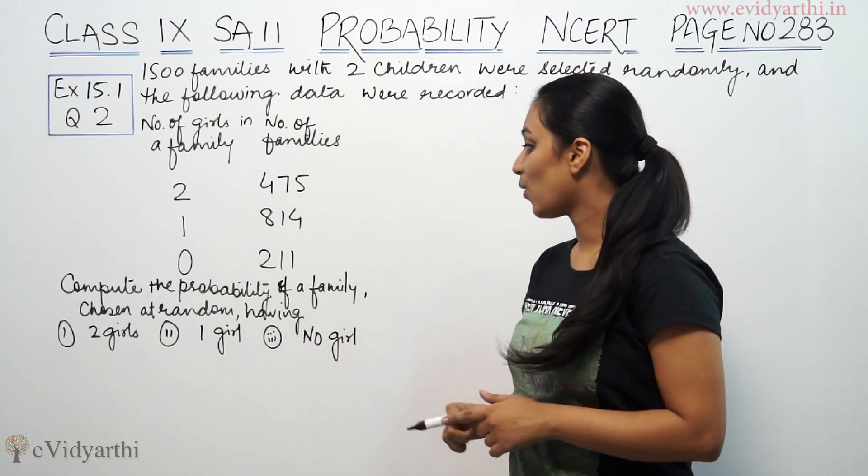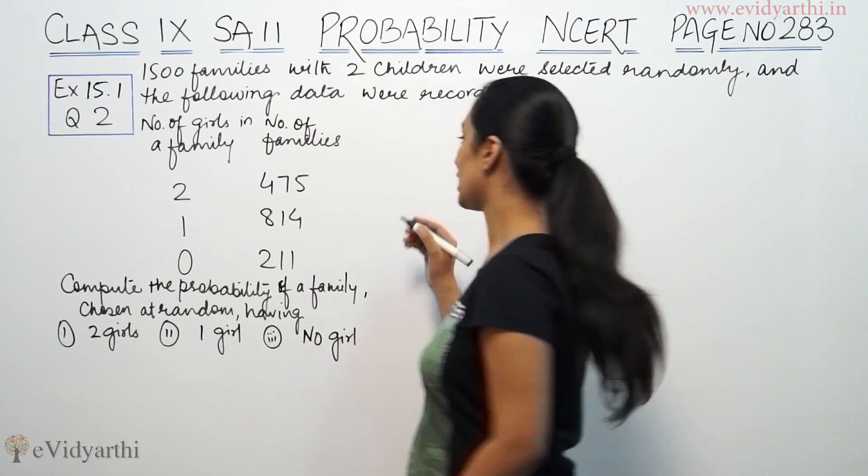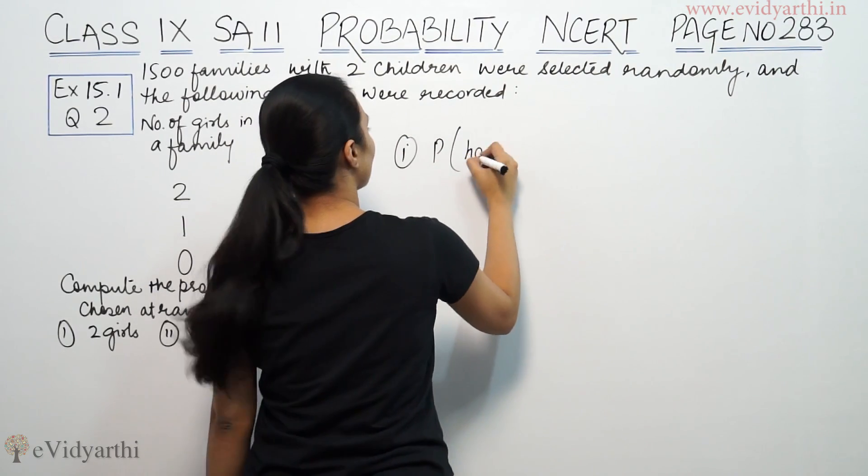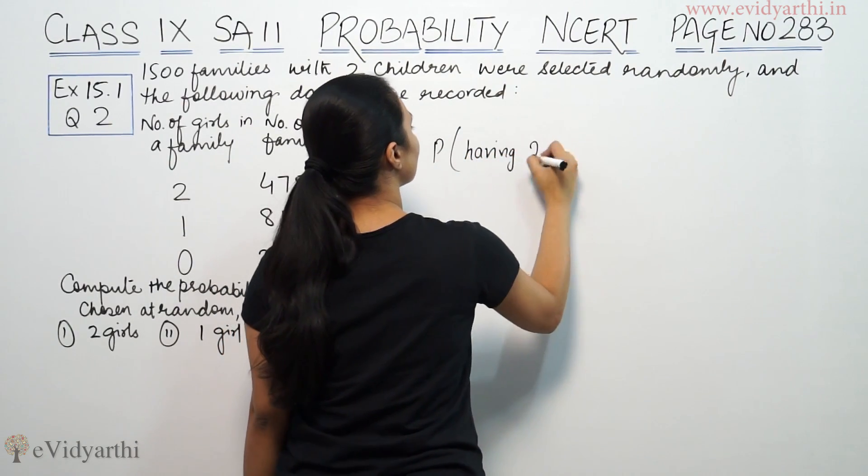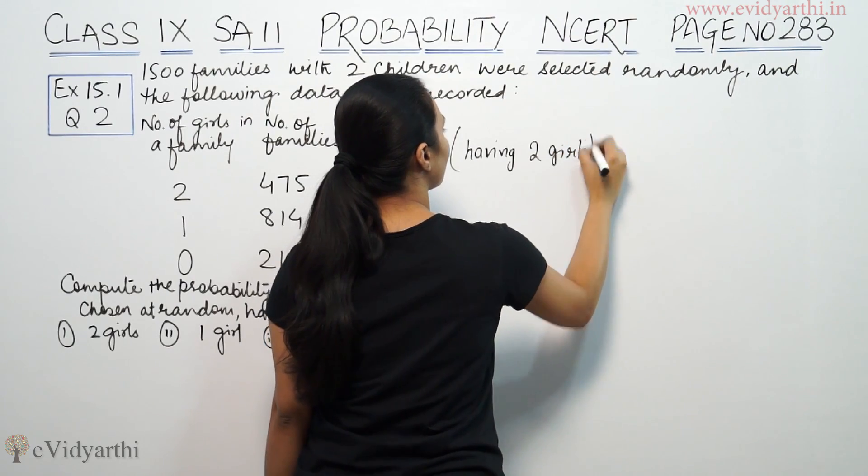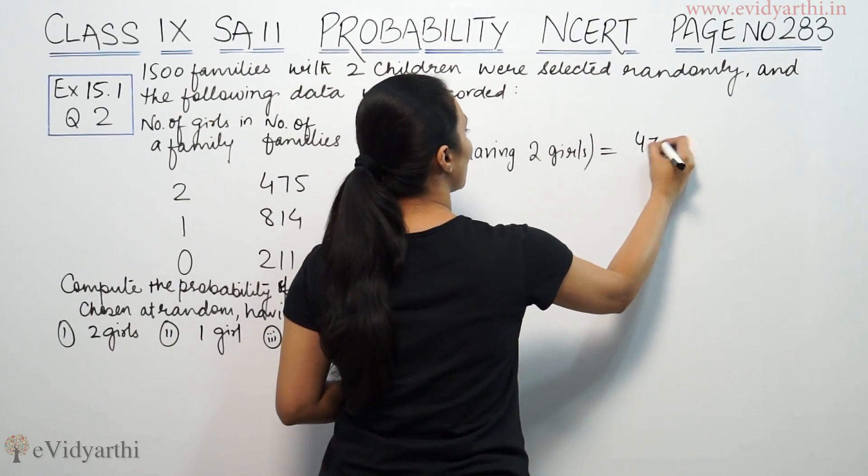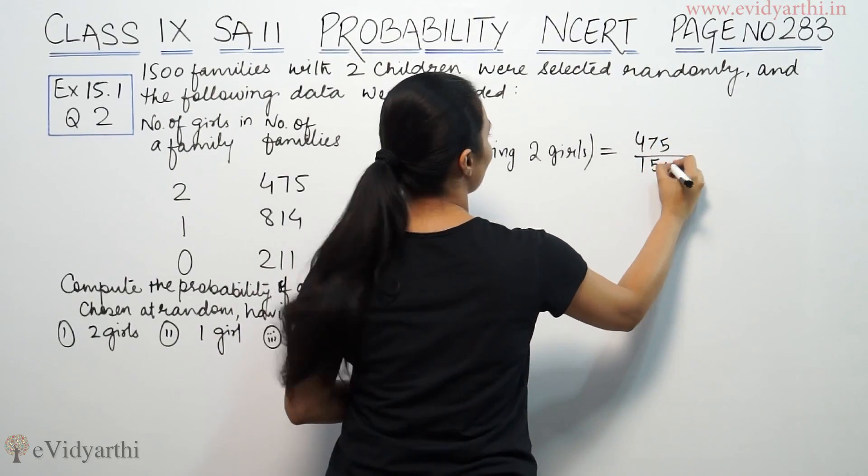So we will calculate for a family has 2 girls, what is the probability of having 2 girls. How many families have 2 girls? 475, and the total is 1500 families.